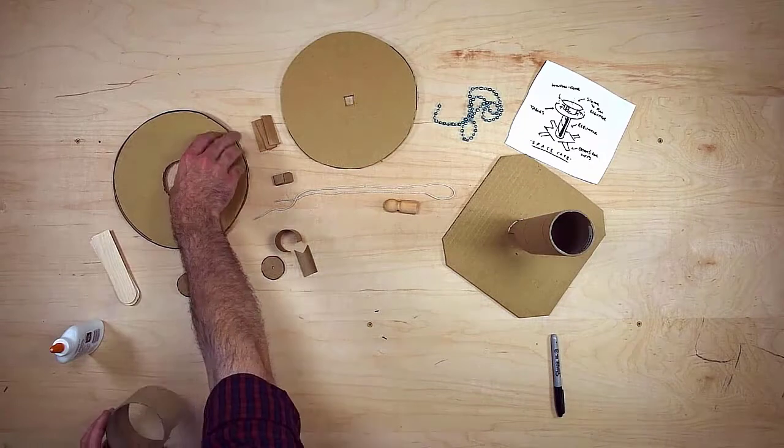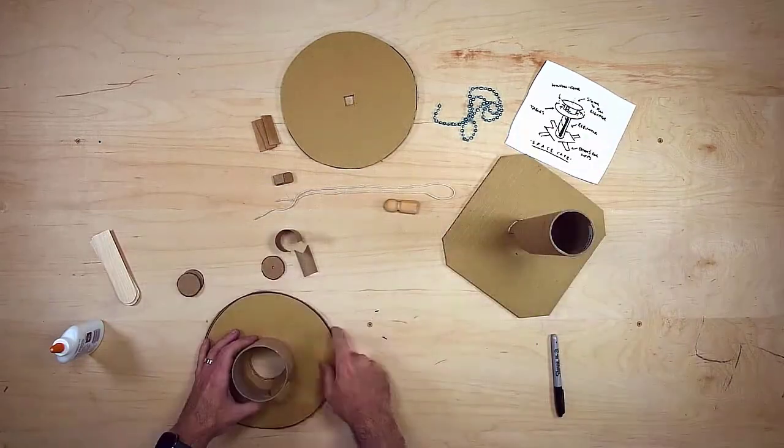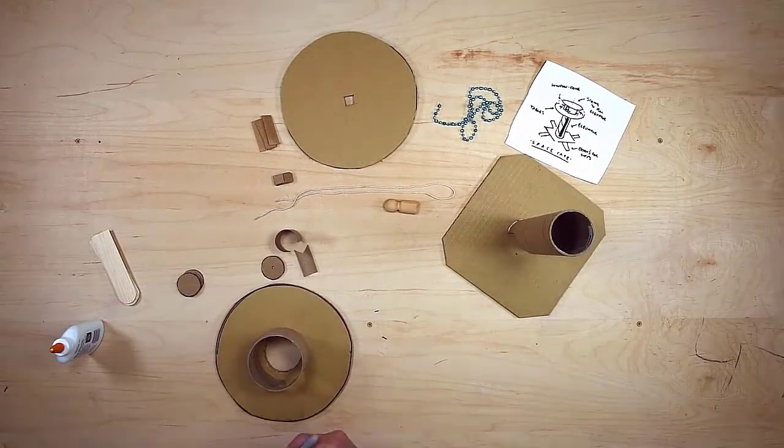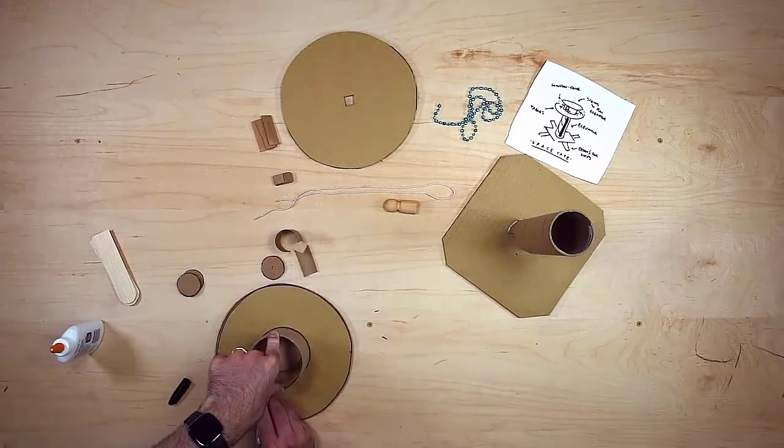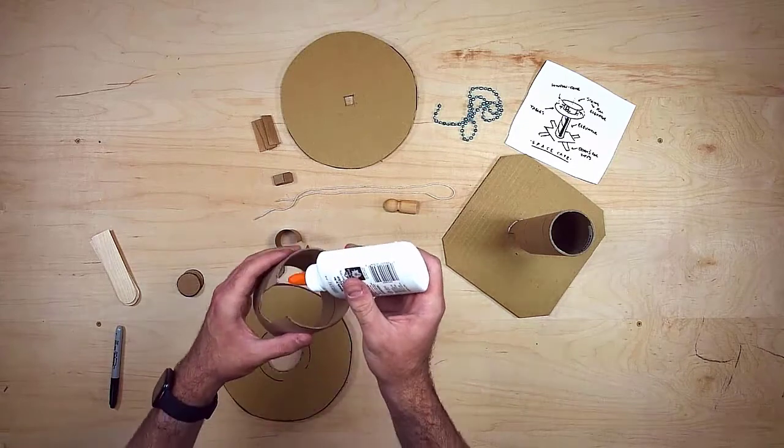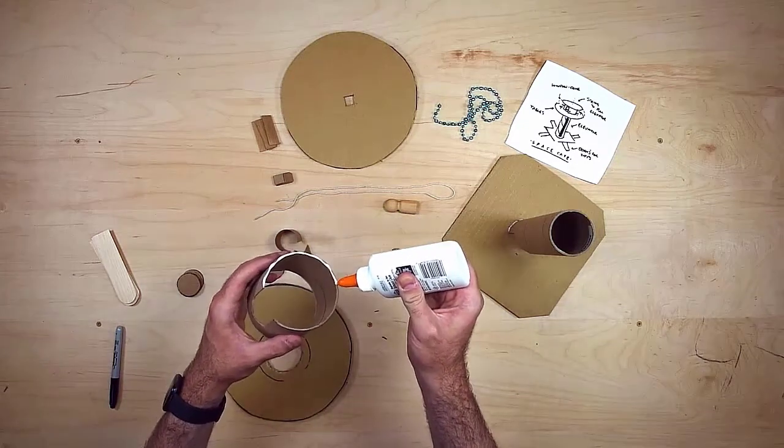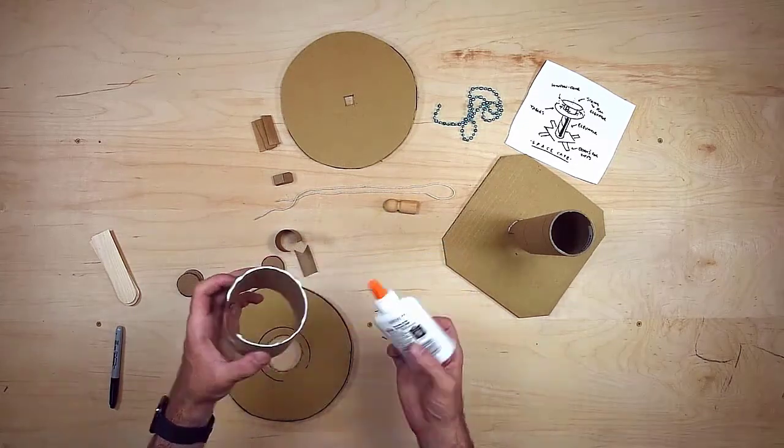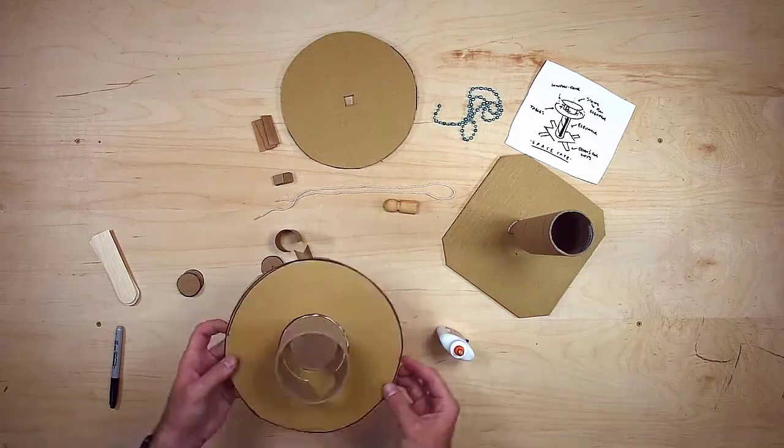I set that aside to dry and move on to the cafe top. Again I mark where I want to put it and then use glue to stick it in place. I make sure to hold it for a few seconds to give the glue time to really grab on. Then I set it aside to dry. It's always good to let glue fully dry before trying to work with the pieces again.